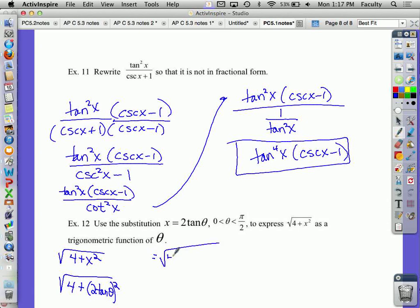Let's see what we can do with this. 2 tangent theta, when I square it, would be 4 tangent squared theta. That's 4 plus 4 tangent squared theta. And isn't 1 plus tangent squared theta equal to secant squared theta? So that's just 2 secant theta.